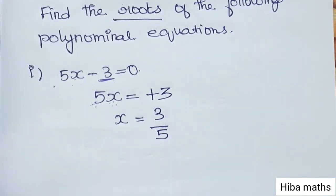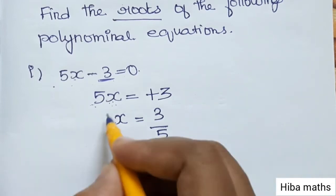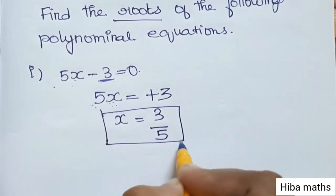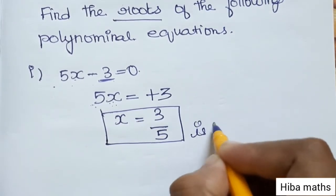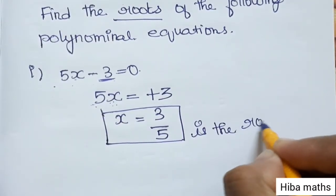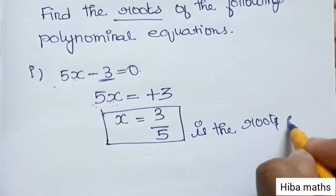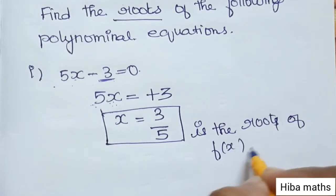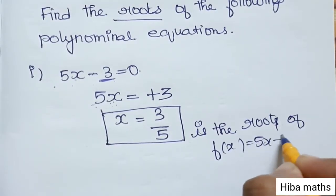This is the root of the polynomial, it is very easy. One step: x = 3/5. This is the root of f(x) = 5x - 3.